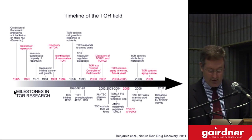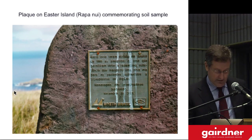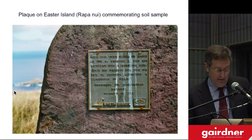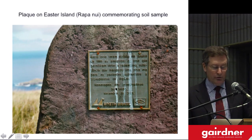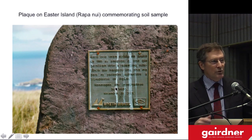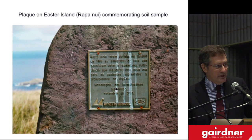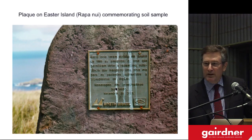If you actually go to Easter Island, you'll find a plaque which commemorates this auspicious act of picking up a handful of dirt. The plaque — in Portuguese for reasons I don't fully understand — says that in this place a sample was obtained in January 1965 that allowed the isolation of rapamycin, a substance which ushered in a new era in transplantation surgery. This reflects the fact that rapamycin was later developed as an immunosuppressive — rejected as an antifungal because it suppressed the immune system, then rediscovered when immunosuppression came into the clinic as therapy.